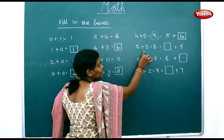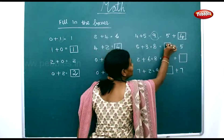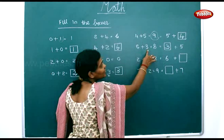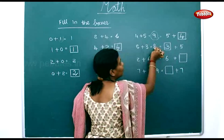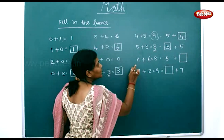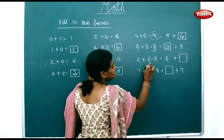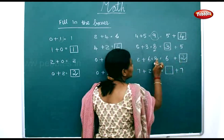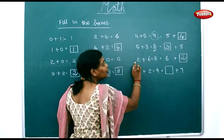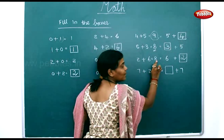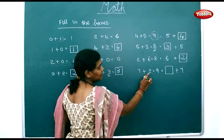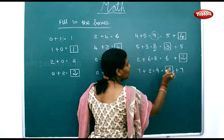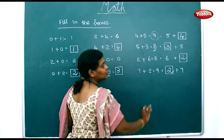5 plus 3 is equal to 8, and 3 plus 5 is also equal to 8. The orders have been changed but the sum remains the same. 2 plus 6 is equal to 8, and 6 plus 2 will also end up as 8. 7 plus 2 is equal to 9, and 2 plus 7 is also equal to 9.